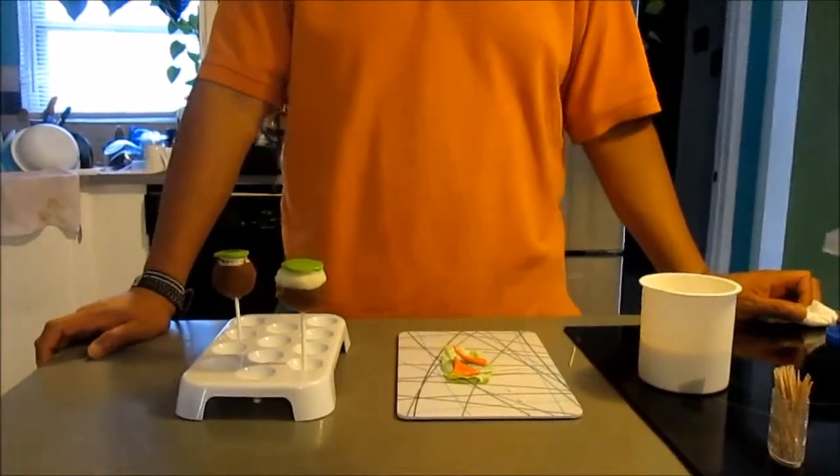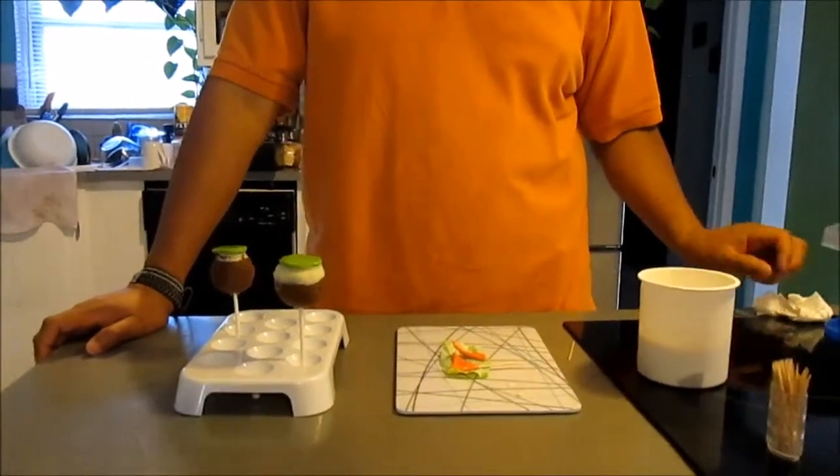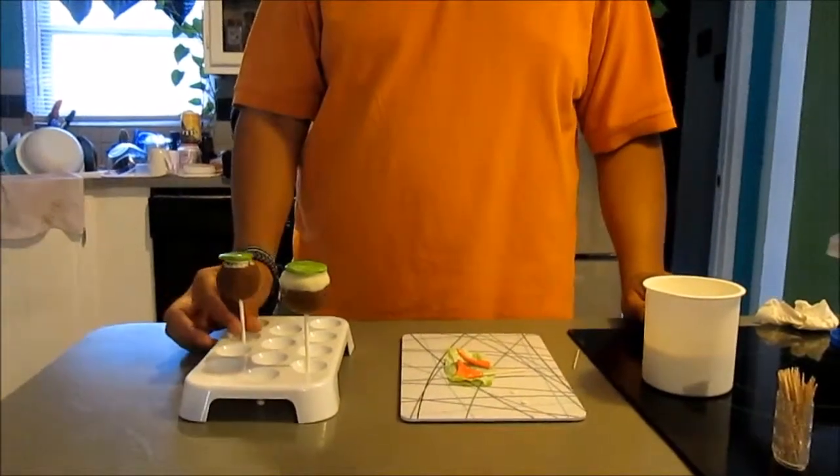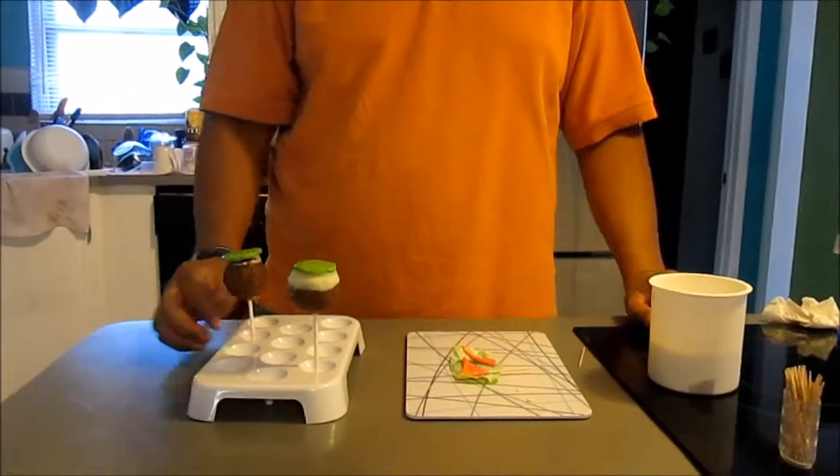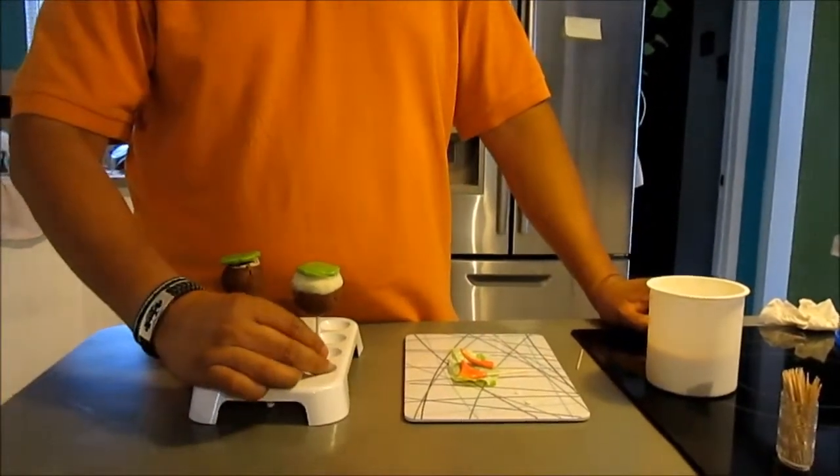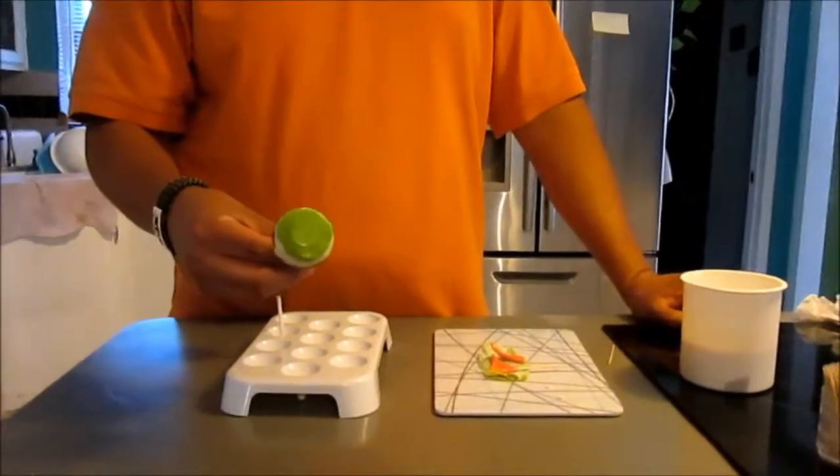We've started with a chocolate cake ball, put the lollipop stick in, and then added a little white chocolate so we can attach the putting green. The putting green is just Tootsie Roll that we flattened out.